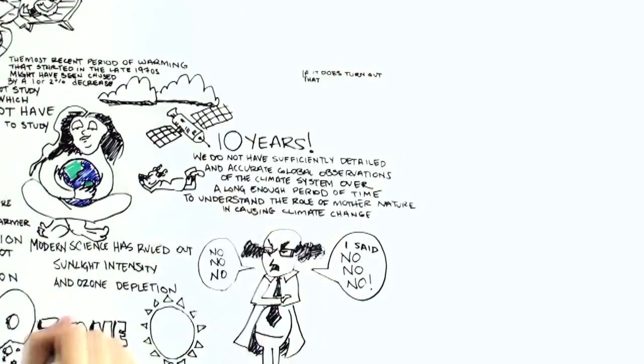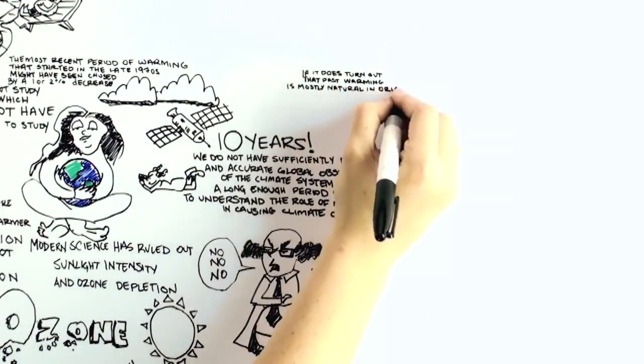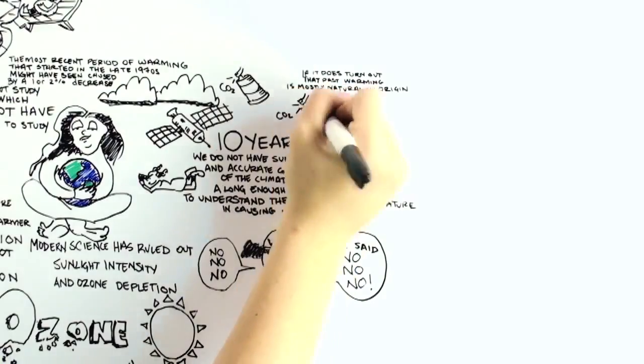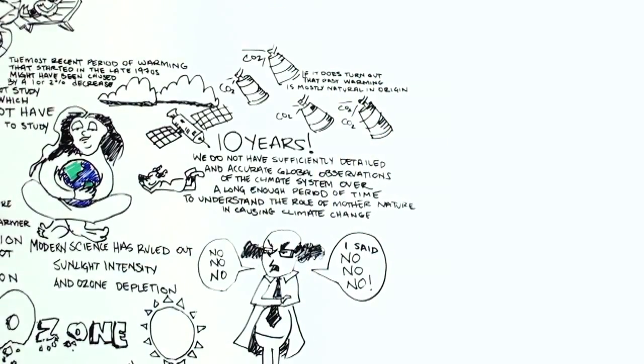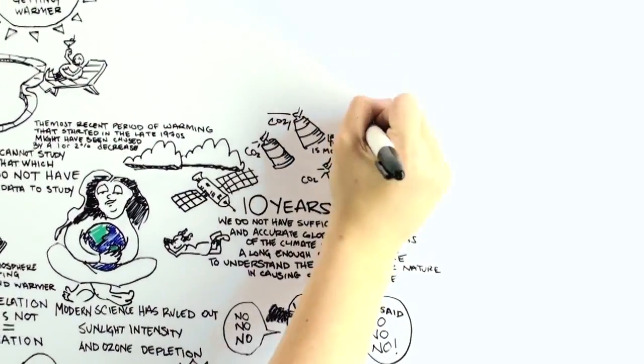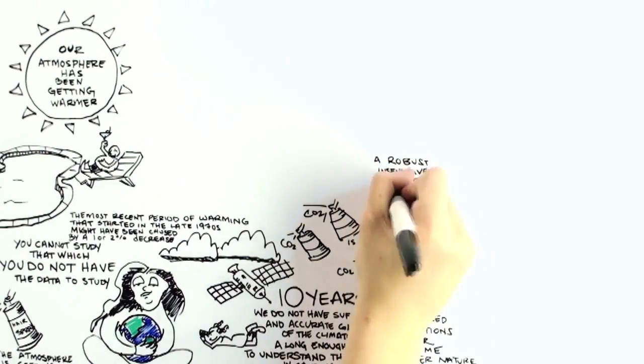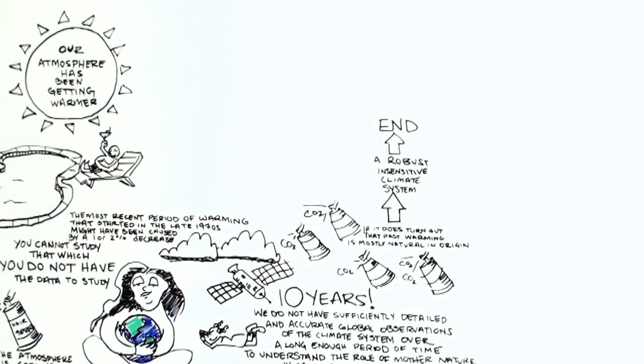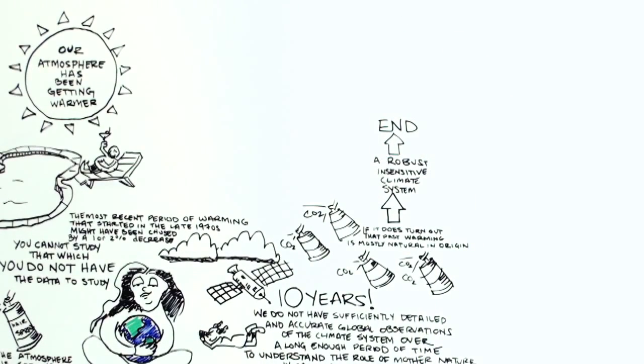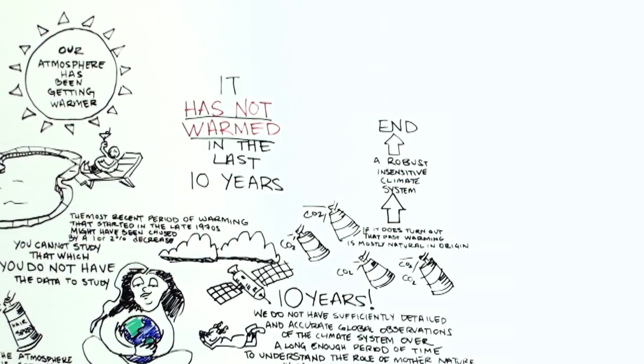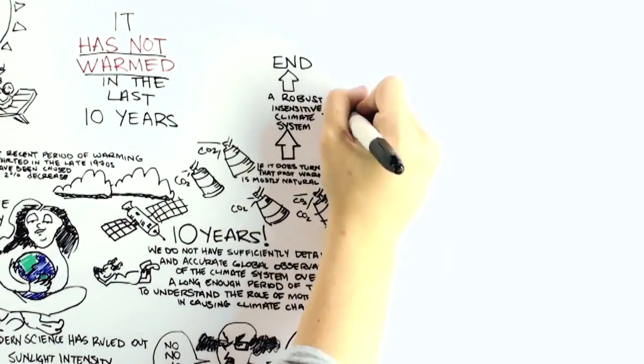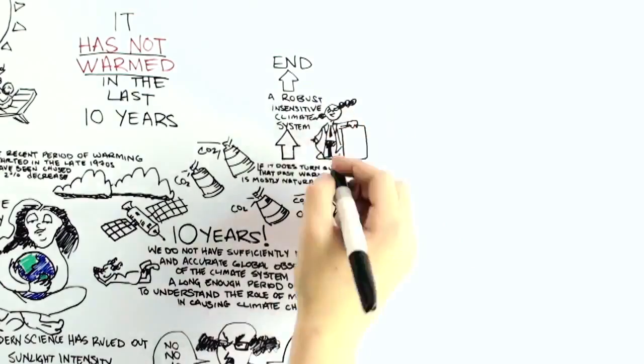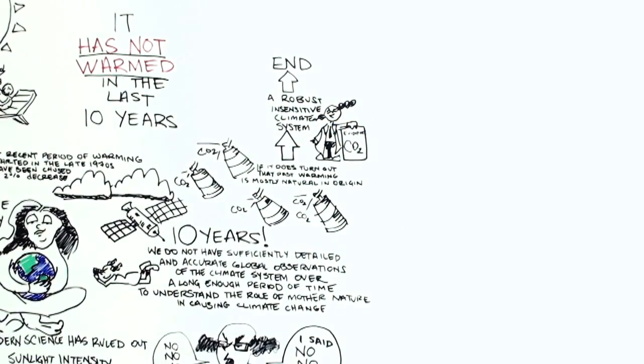Now, if it does turn out that past warming is mostly natural in origin, then it takes a much stronger push to cause warming than just an increase in CO2 levels, which indicates a robust, insensitive climate system. In that case, the natural warming can be expected to end at some point, and little additional warming from our greenhouse gas emissions would then be expected later. Since it has not warmed in the past ten years as most scientists expected it would, this is evidence that scientists have overestimated the role of carbon dioxide in climate change.